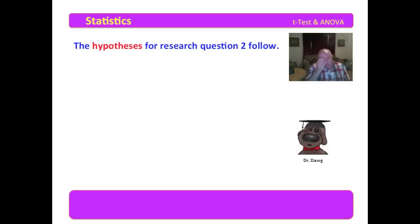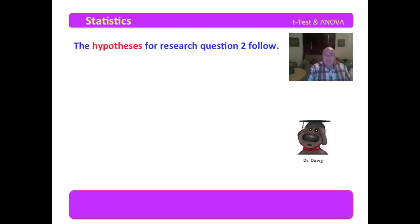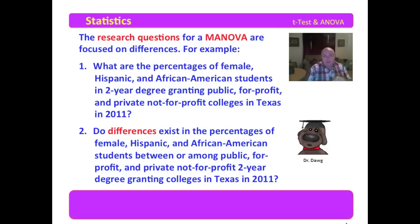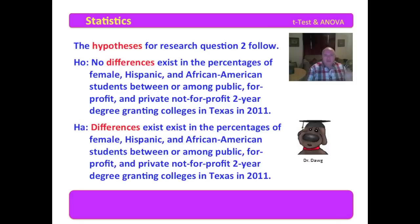The hypotheses should match the research questions. There are many ways of writing questions and hypotheses — many right ways, but also some wrong ways. I have a descriptive question and a methodology question, and now I have my hypotheses for the methodology question — plural, because I include both the null and alternate hypothesis. The null hypothesis is that no differences exist in the percentages of female, Hispanic, and African American students between or among public, for-profit, and private not-for-profit two-year degree-granting colleges in Texas. Notice that the hypothesis exactly matches the question: the null states no differences, and the alternate states that differences exist.